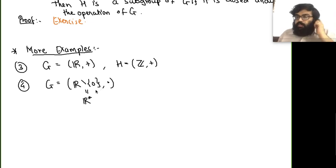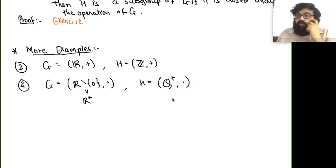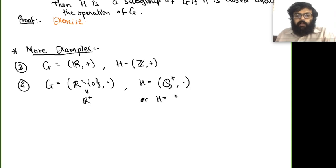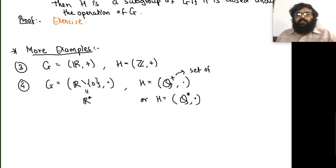Similarly, let G = (R*, ·), non-zero real numbers with multiplication (zero removed because it has no inverse), and H = (Q*, ·), non-zero rationals with multiplication. One can also consider H = Q⁺, the set of all positive rationals, which is also a subgroup.